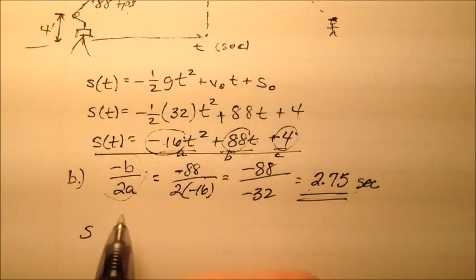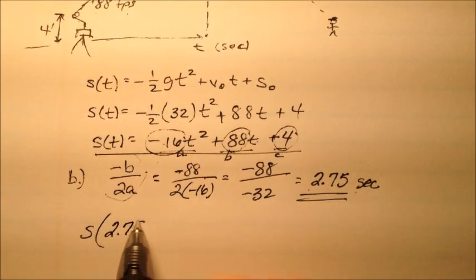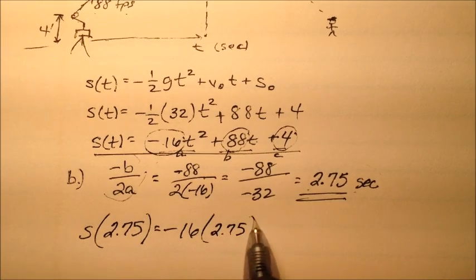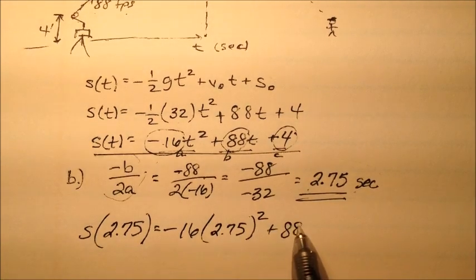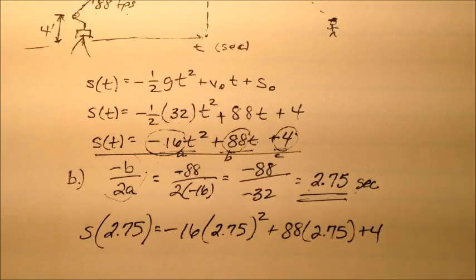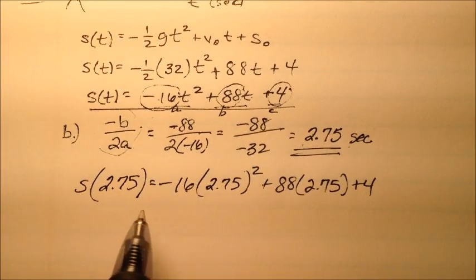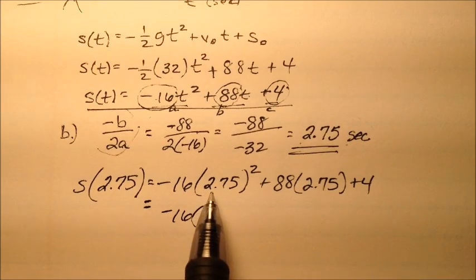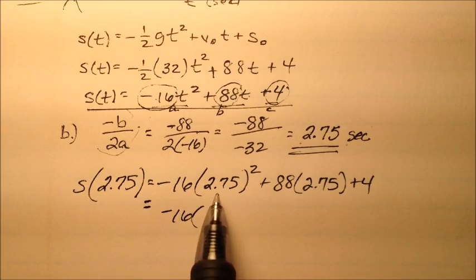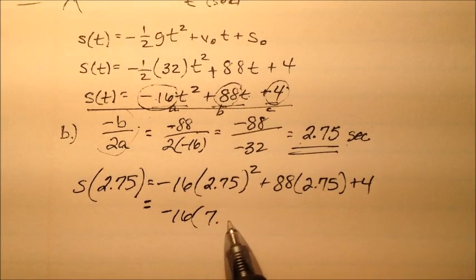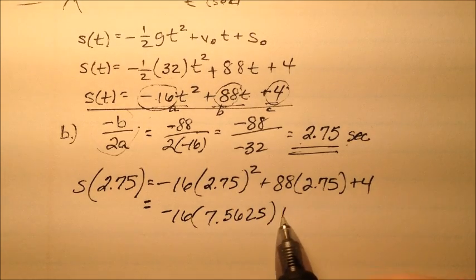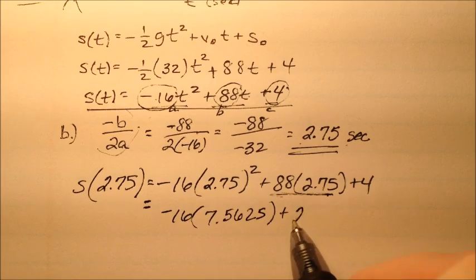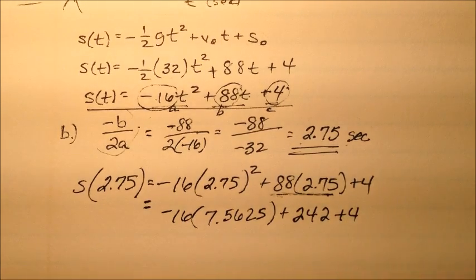I'm going to plug 2.75 in every time I see a t. Now it's just a matter of simplifying this expression. -16 times 2.75 squared, that's 7.5625. Plus 88 times 2.75, which is 242. Then plus 4.